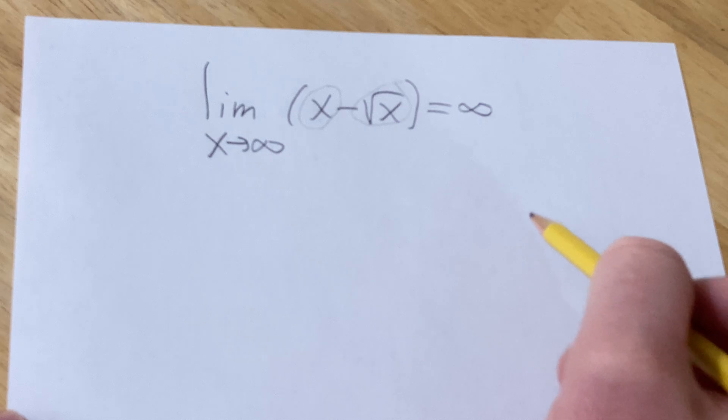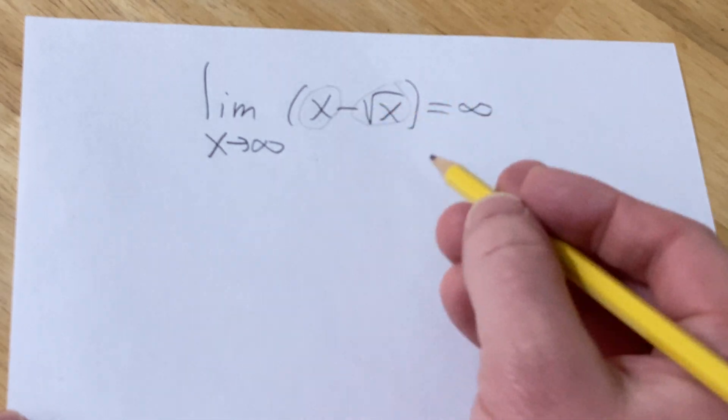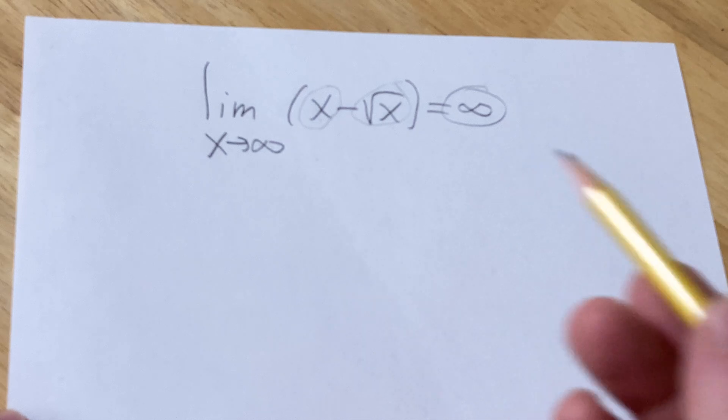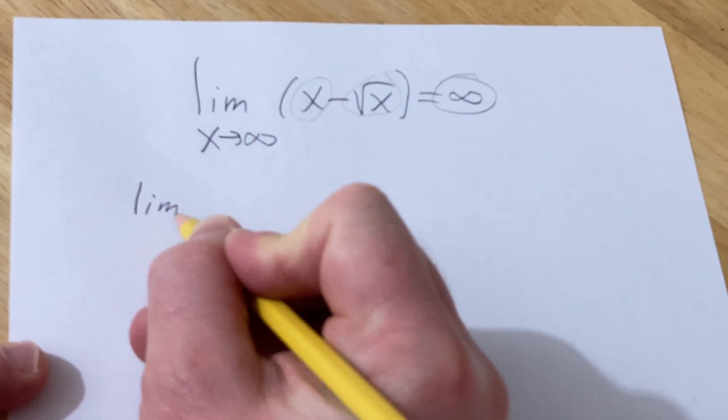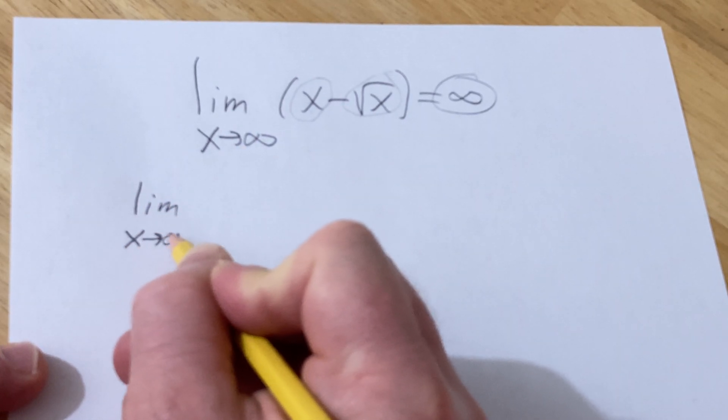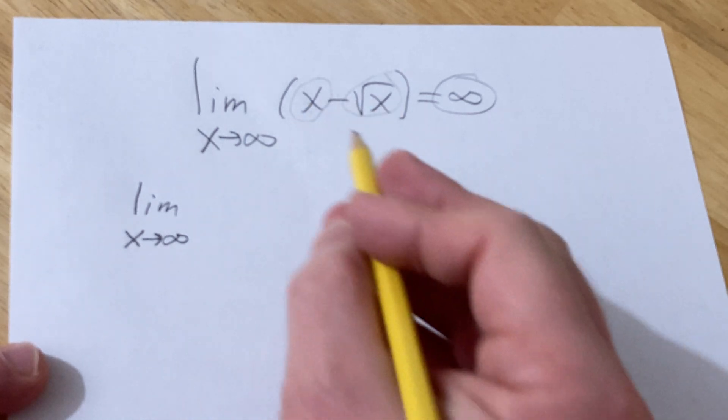So basically you're going to get infinity as an answer. If you're not convinced, you can actually do some algebra to show the work. But let me show you. So this is the limit. And the algebra will give you an answer that is a little bit more convincing, perhaps, if that didn't make sense.